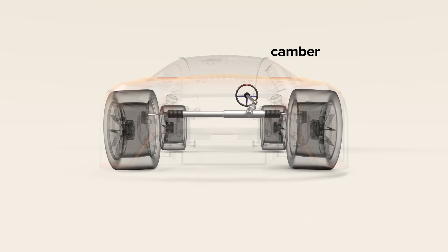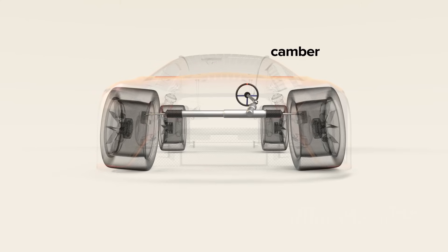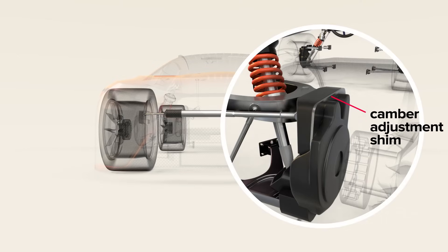Camber, which is the angle of each tire in relation to the center line of the vehicle when viewed from the front or back, can also be adjusted using shims.